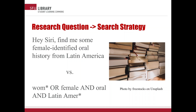Now let's turn to the asterisk symbol. It is a powerful tool because it allows us to include variations or alternate endings of a term. For instance, WOM* will yield results for woman, women, and any other term that starts with WOM. By understanding and applying these techniques, you can make your search strategy more nuanced and effective, and it can save you a lot of time by yielding more precise results.